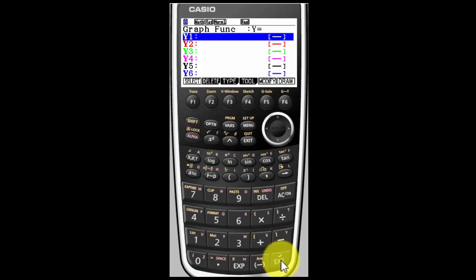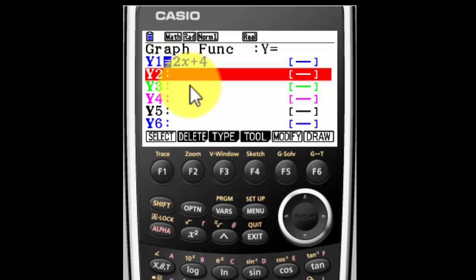So here's where you put in your function. I'm going to put in the function 2x plus 4. Now I need to tell the calculator that I'm done with that function so I hit Execute. And you'll notice the equal sign is highlighted. That means it's an active function and that's what we want.